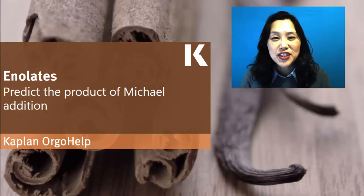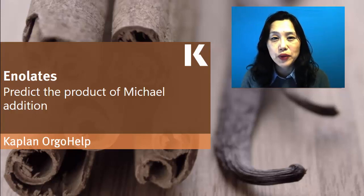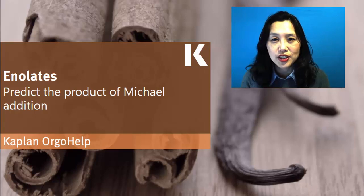Hello and welcome to this video on enolates. My name is Airi Kim and in this video we'll be predicting the products of a Michael reaction, which is a type of nucleophilic addition reaction involving an enol and an unsaturated carbonyl.